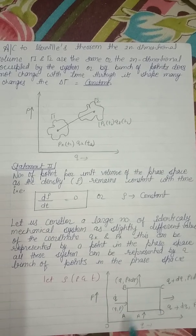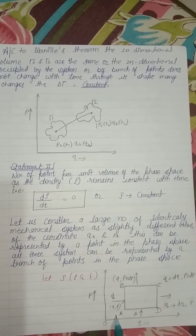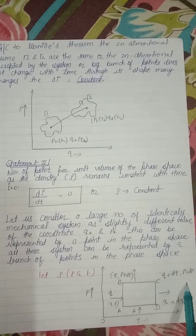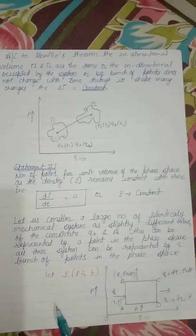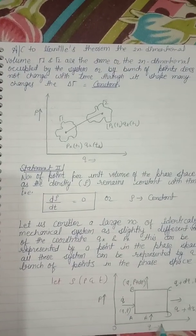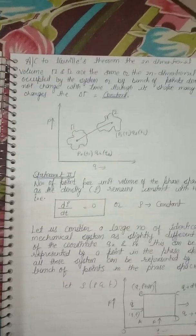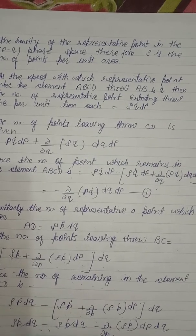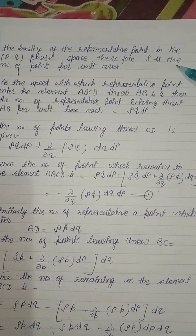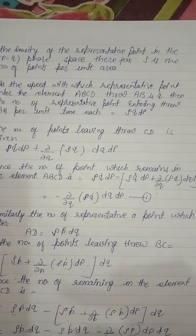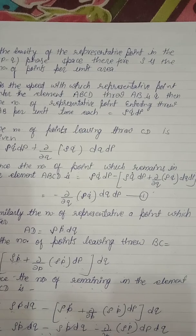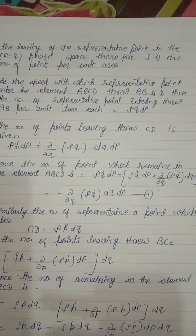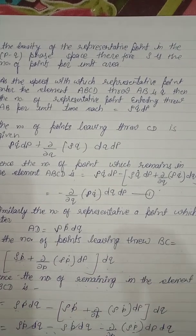I draw a plot with points A, B, C, and D forming a square shape. The coordinates are: Q, P; Q+dQ, P; Q, P+dP; and Q+dQ, P+dP. This gives point P' and Q. I will now represent this theory: the density of representing points in the P-Q phase space is ρ — the number of points per unit area. Let Q̇ be the speed with which representing points enter element ABCD.